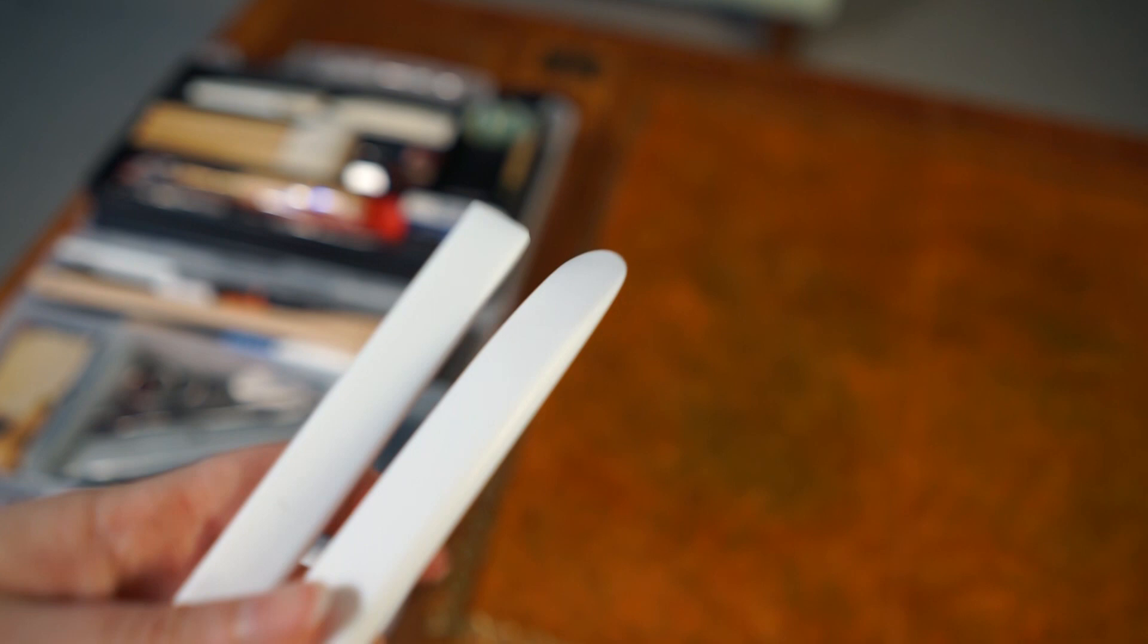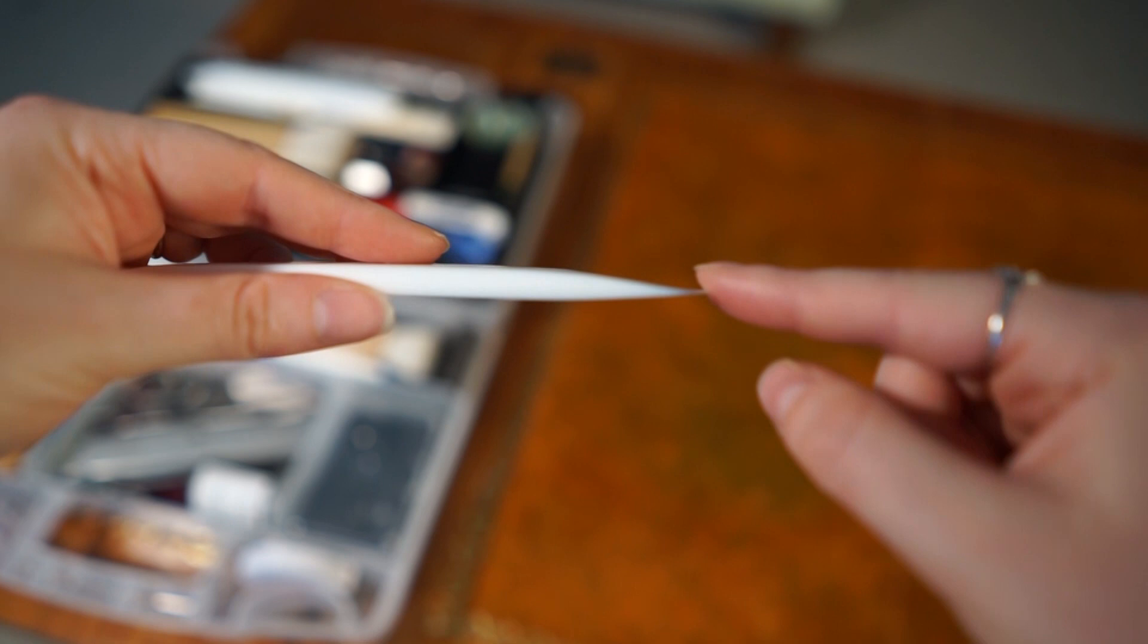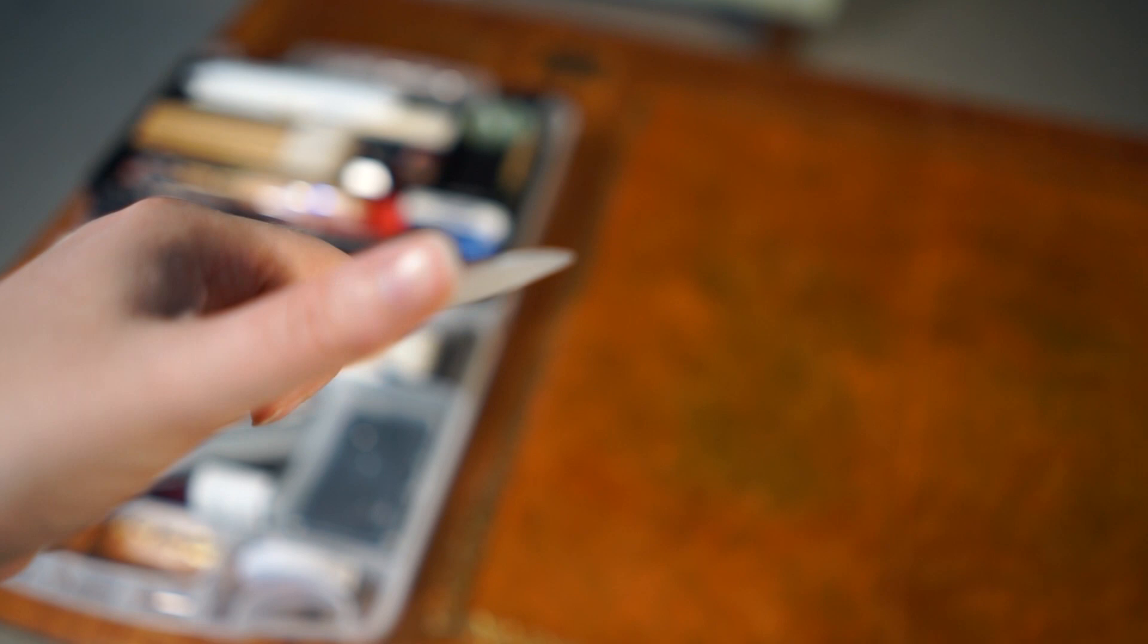And then lastly I have my trusty Teflon folders. So Teflon is a really great material that is pretty much non-stick, so nothing will stick to these folders. They're great for separating layers. I have two that I purchased, one large and one small. And then I also have this one which was shaped to a really thin point at one end. This was actually shaped by Dominic Riley who's a really renowned bookbinder and he sold them after he customized them. It's a beautiful end, flexible, thin, nothing sticks to it.